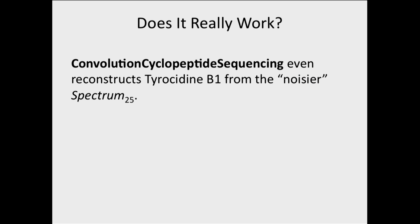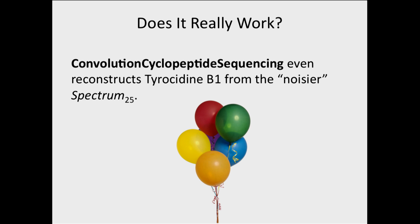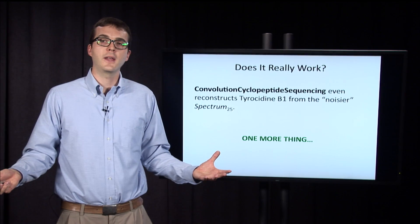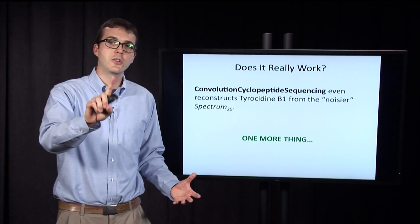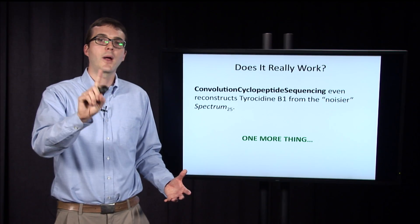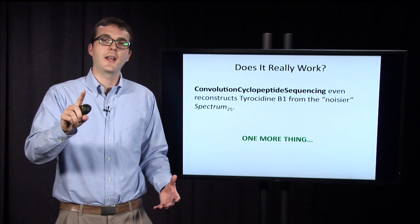Then we ask: what about spectrum 25 — the noisier spectrum that none of our algorithms has been able to correctly reconstruct tyrosinine B1 from? When we apply convolutional cyclopeptide sequencing to that really noisy spectrum, it's good news: we can reconstruct tyrosinine B1 again. I do want to mention one more thing about practical considerations, and I'll do that in the next section.